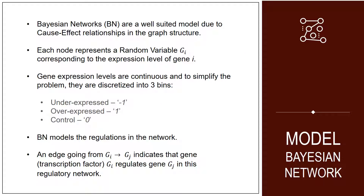Bayesian networks are a cause-and-effect relationship structure where the random variables here are gene expression levels. We'll discretize the random variables by discretizing the gene expression levels into underexposed, overexposed, and control. We then try to model the relationship between these genes by learning the structure of the Bayesian network.